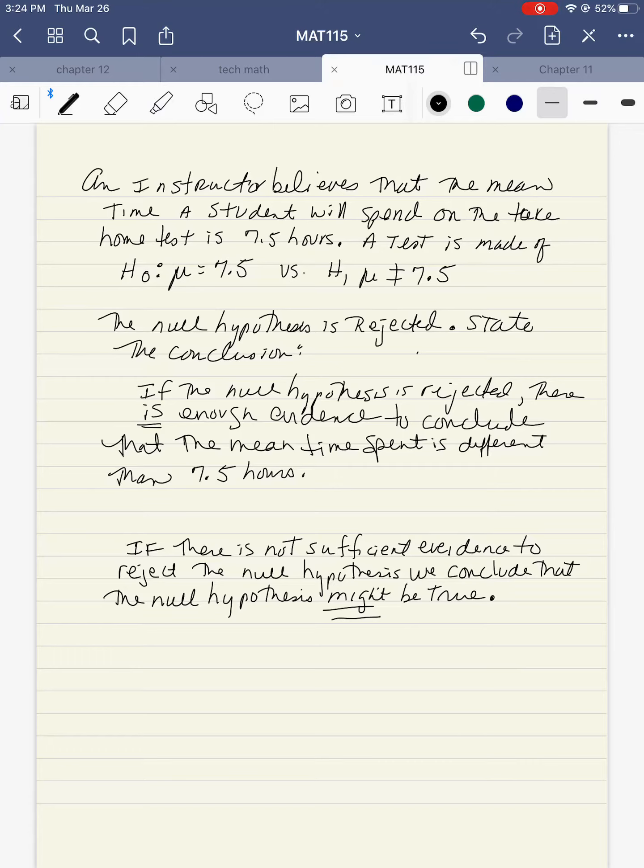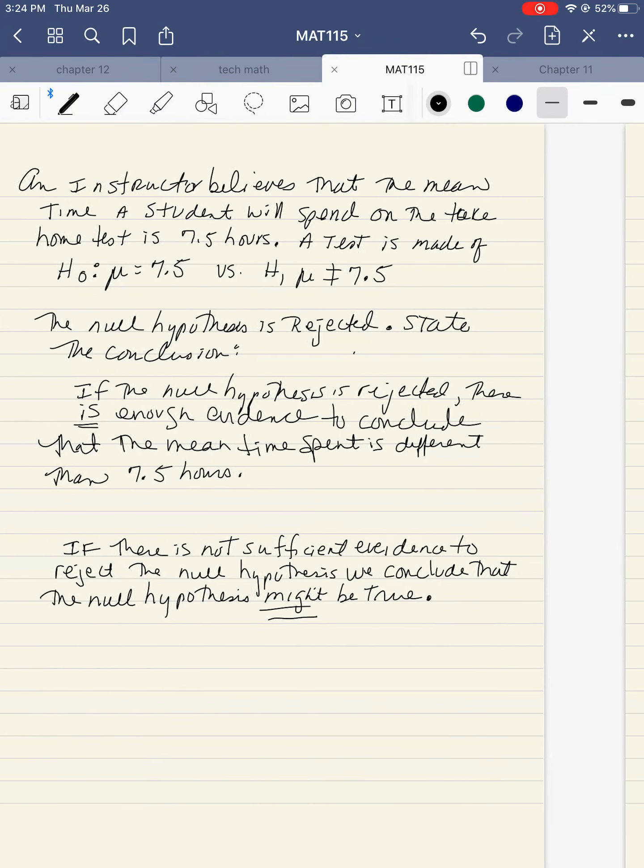The null hypothesis is rejected. State the conclusion. If the null hypothesis is rejected, there is enough evidence to conclude that the mean time spent is different than 7.5 hours. If there is not sufficient evidence to reject the null hypothesis, we conclude that the null hypothesis might be true.